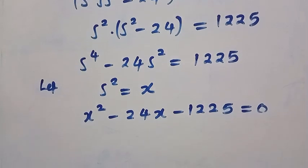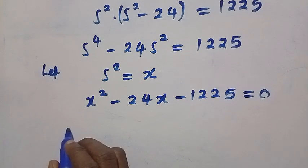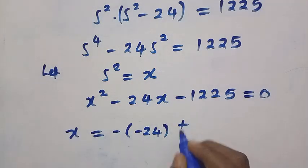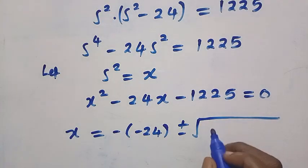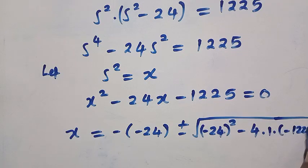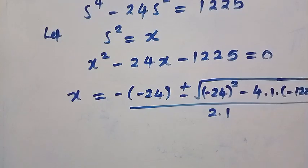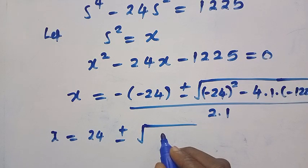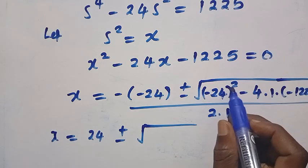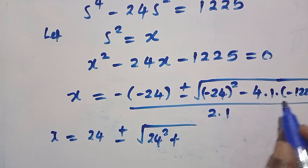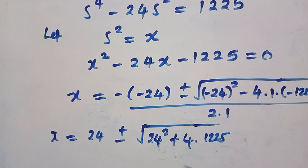We solve this quadratically to find the value of t. Using the quadratic formula, t equals minus B plus or minus the square root of B squared minus 4AC, divided by 2A. That gives us: negative of minus 24, plus or minus the square root of minus 24 squared, minus 4 times 1 times minus 1225, all divided by 2 times 1. This simplifies to 24 plus or minus the square root of 576 plus 4900, divided by 2.